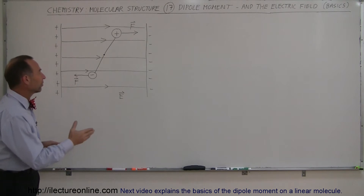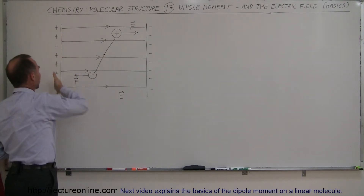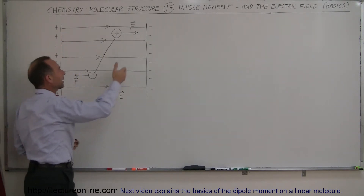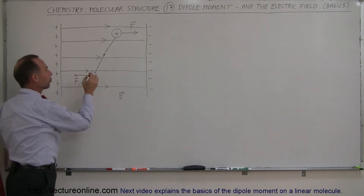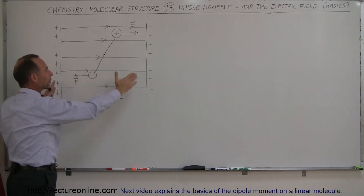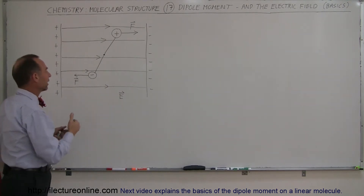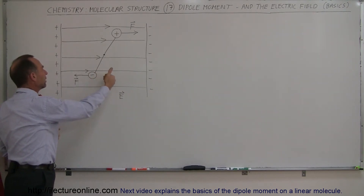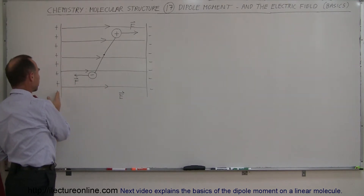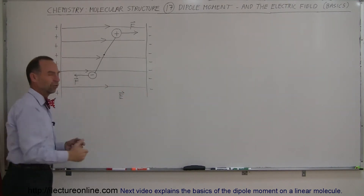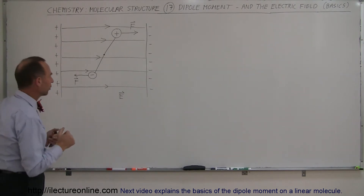An electric field is the presence of positive charges on one side and negative charges on the other side. Whenever you place a charge within that location, it will feel the effect of the electric field. Negative charges will be driven in the opposite direction of the electric field. The electric field always goes from a positive to a negative end, just like the dipole is always from the positive charge to the negative charge.